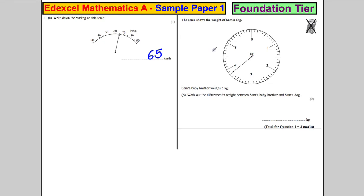The scale shows the weight of Sam's dog. Sam's baby brother weighs five kilograms. Work out the difference in weight. So let's highlight what we're told to do. We want the difference in weight between Sam's baby brother and Sam's dog. Be careful here not to just write down the scale. It's a slightly more involved question. That's why it's two marks.